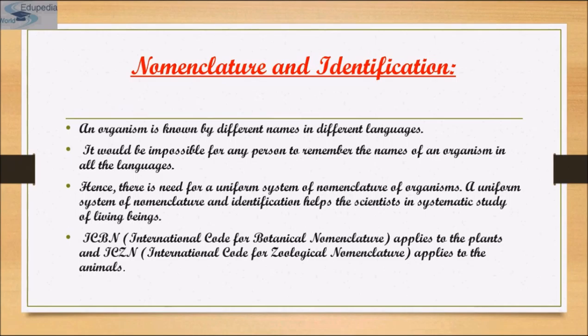This system of providing a name with two components is called binomial nomenclature. This naming system was given by Carlos Linnaeus and is practiced by biologists all over the world.